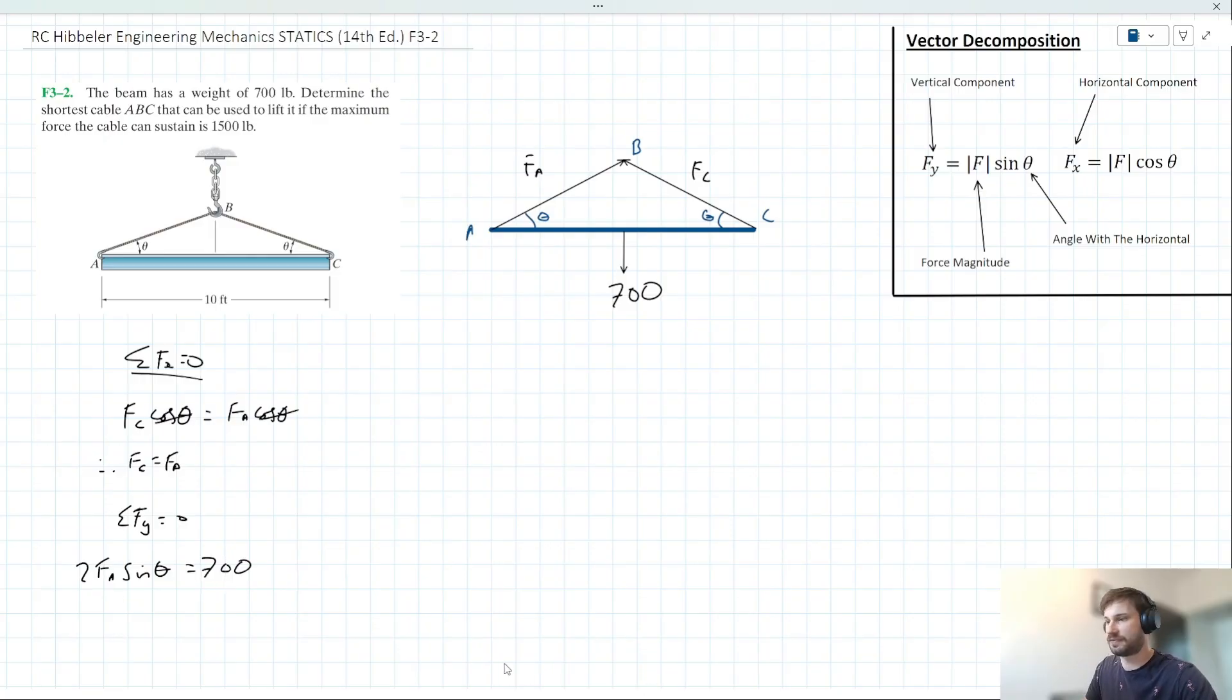Now, is this solvable with all the information that we've written down here? Well, no, we've got two unknowns here, FA and theta. But if we refer back to the question, we note that cable ABC can sustain a maximum force of 1,500 pounds.